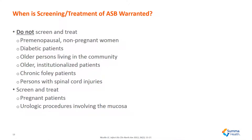So when do we want to screen and treat patients without symptoms of a urinary tract infection or asymptomatic bacteria? Essentially we do not treat any of the following patients: pre-menopausal non-pregnant women, diabetic patients, older patients living in the community, older institutionalized patients, chronic Foley patients, or persons with spinal cord injuries. We should screen and treat pregnant patients or urologic patients who are going to undergo a procedure involving the mucosa.